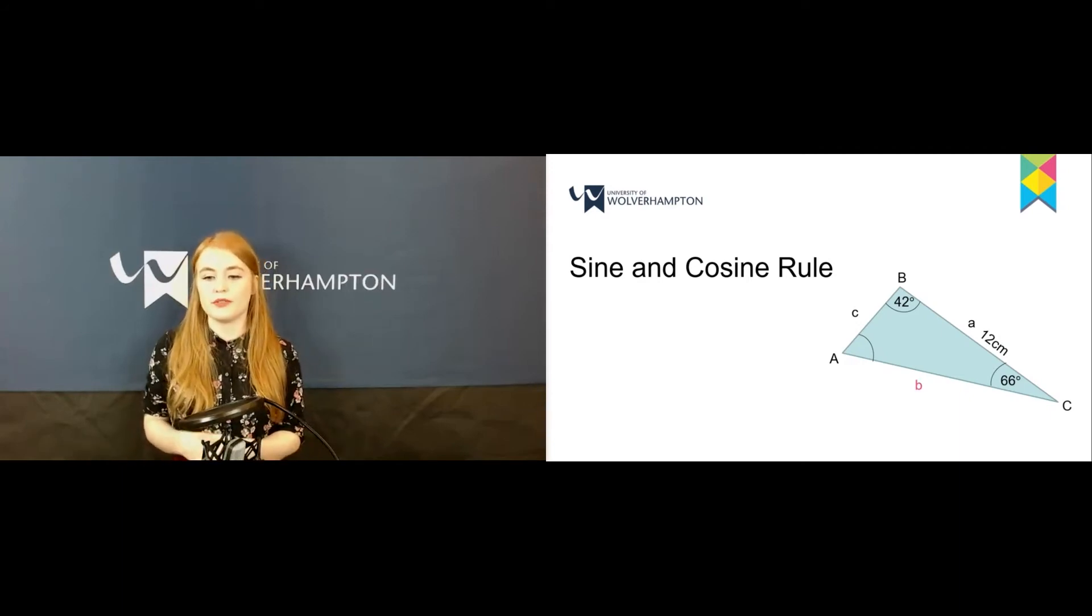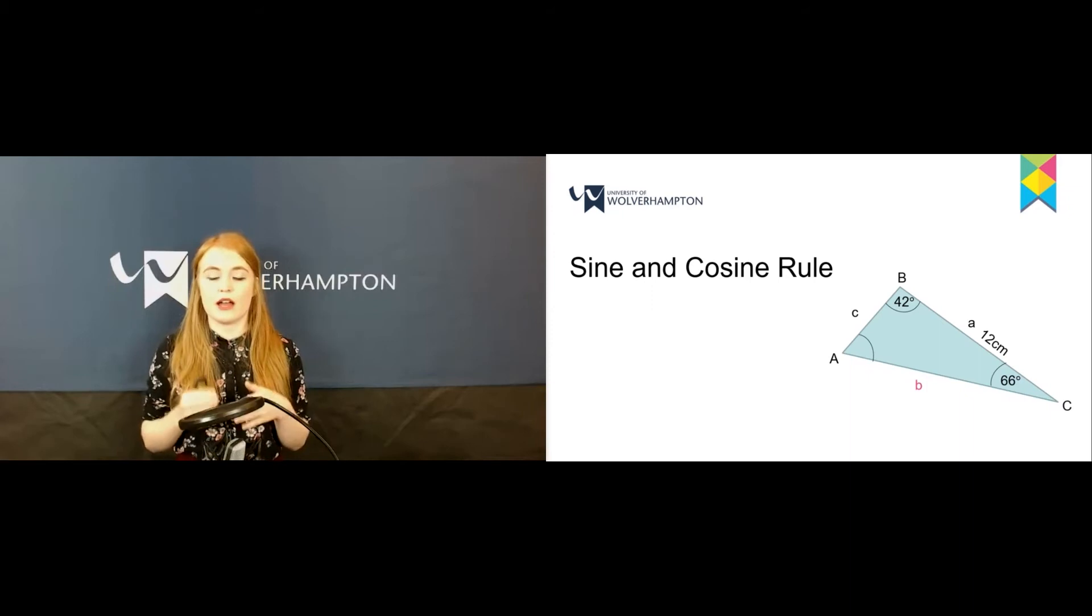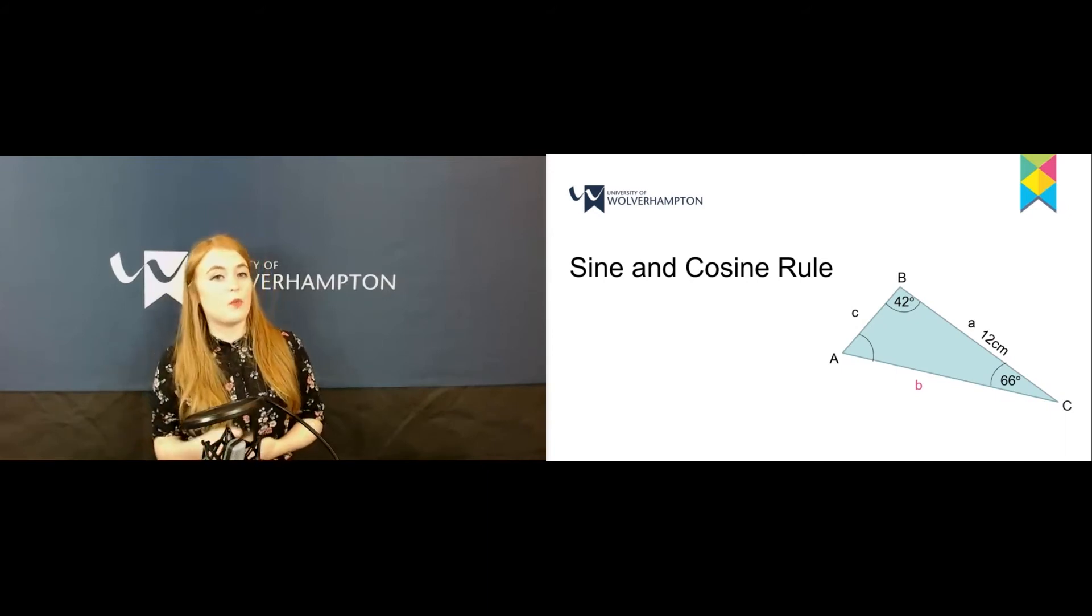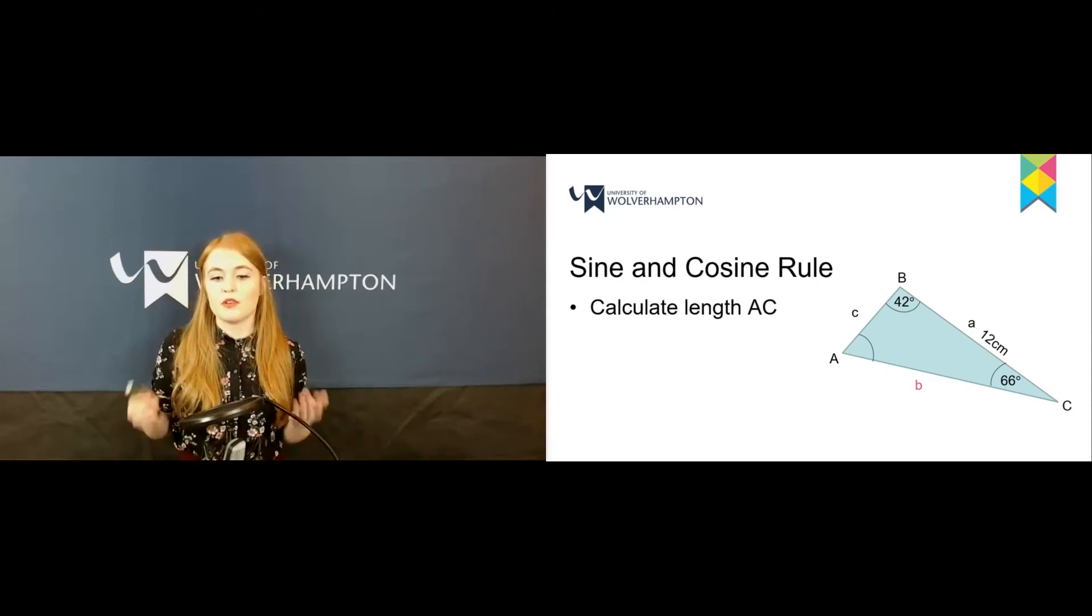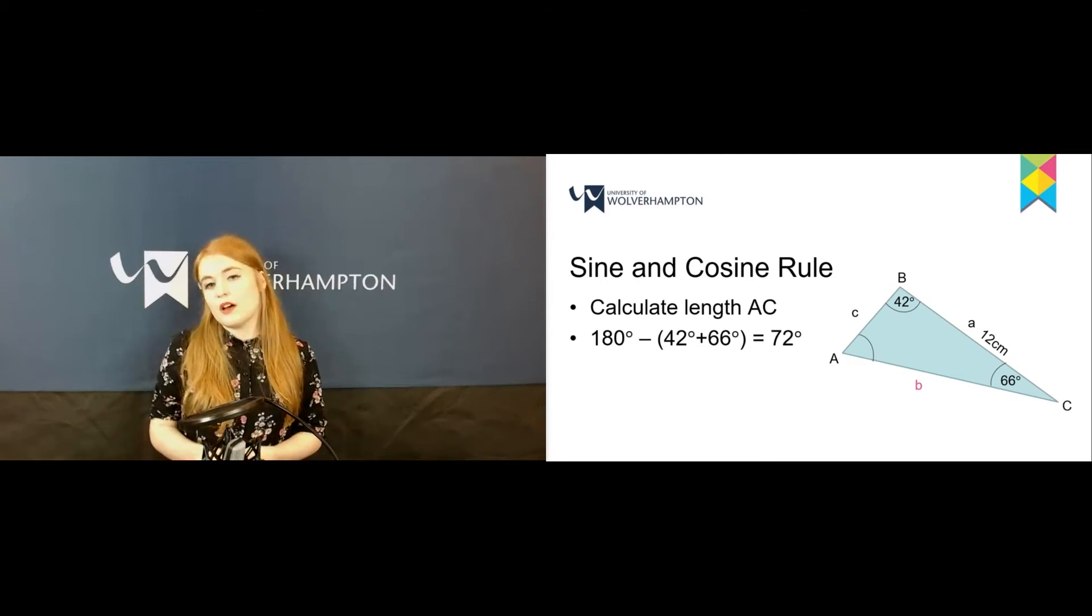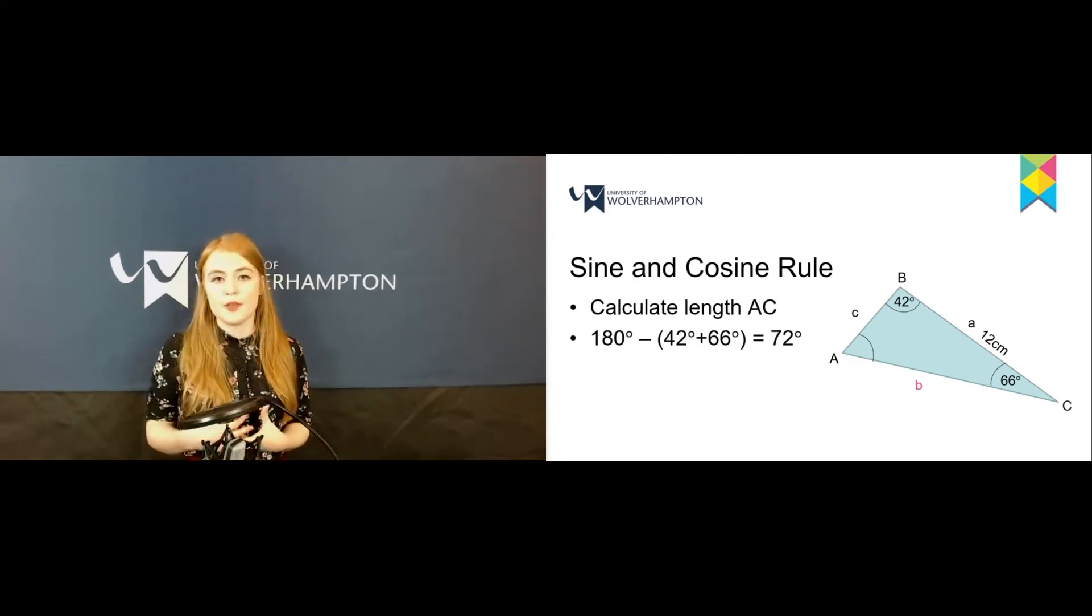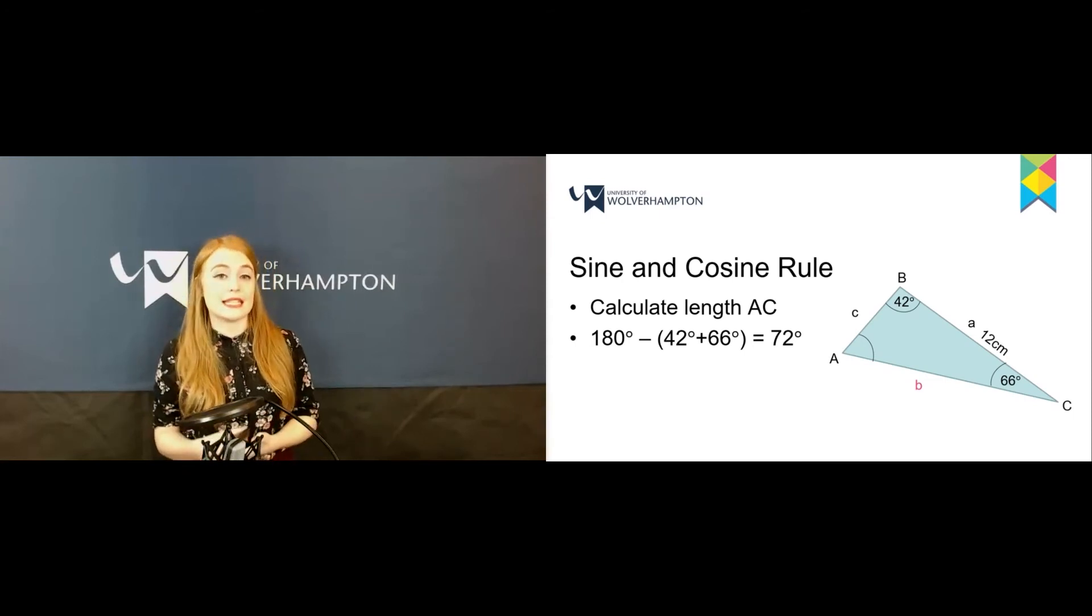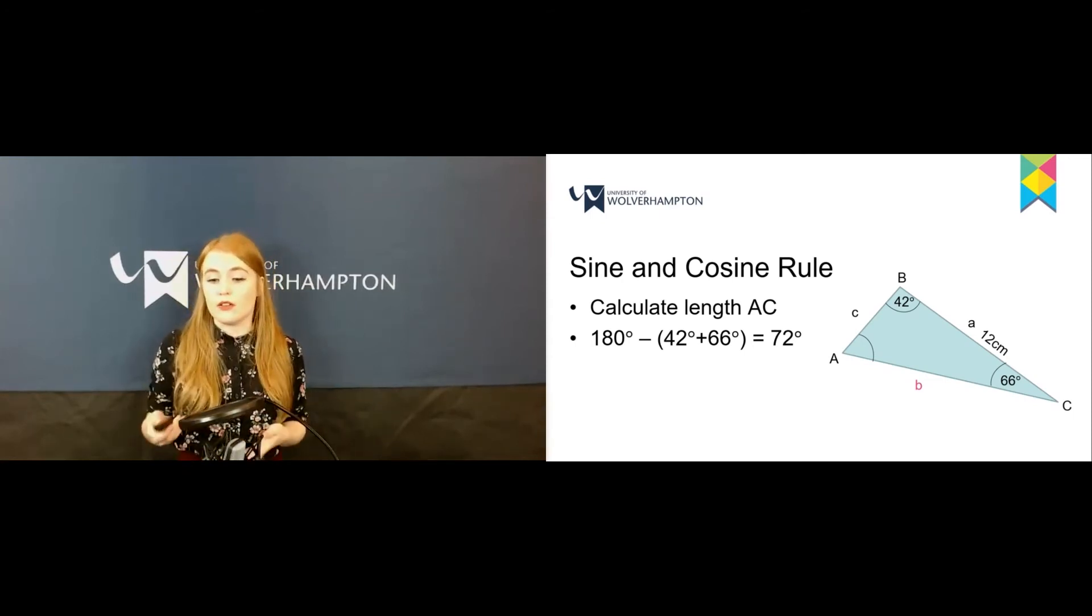If we were given this example, we have 42 degrees for angle B, 66 degrees for angle C, and side a is 12 centimeters. We want to figure out side length b. First, let's figure out the last angle. All angles in a triangle add up to 180, so if we take away 42 and 66 from 180, angle A is 72 degrees.